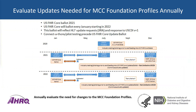Gay noted that the US Core implementation guide has an annual update cycle in response to USCDI versions, industry requirements, and errata. Because of this, the MCC project will need to review its profiles annually to determine whether profiles are still needed, whether additional constraints are required, or whether constraints need to be removed.